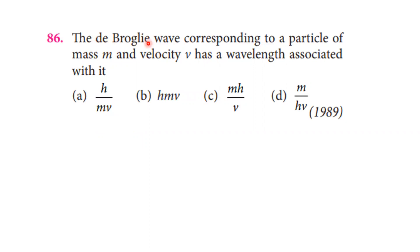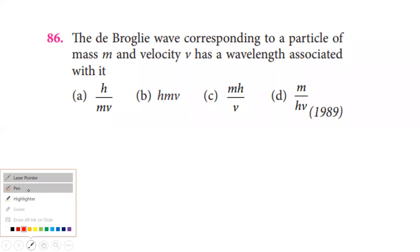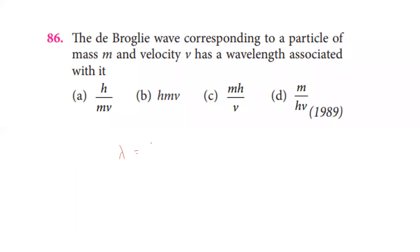The de Broglie wave corresponding to a particle of mass m and velocity v has a wavelength given by h divided by momentum, where momentum equals mass times velocity. Therefore the de Broglie wavelength is h divided by mv. The answer is the first option.